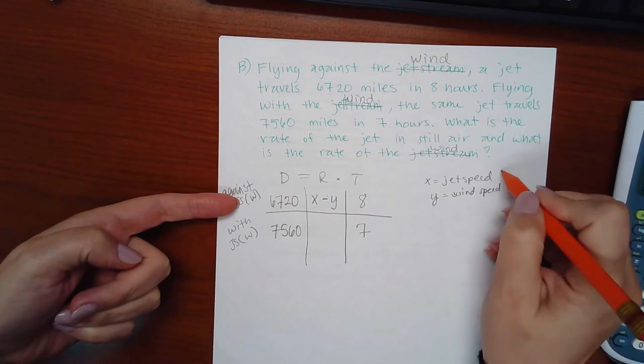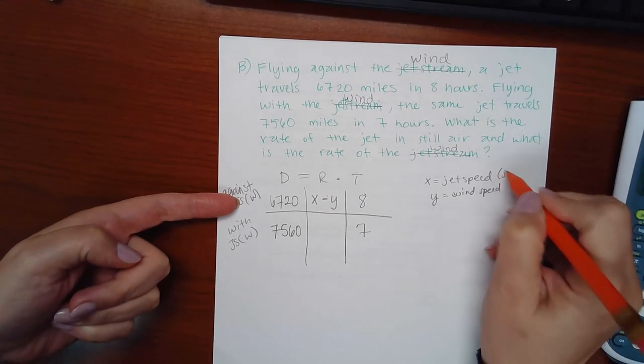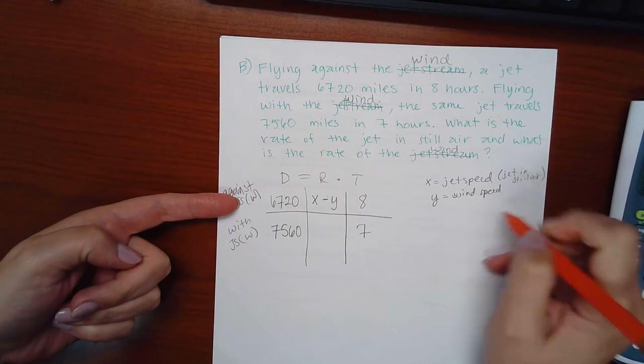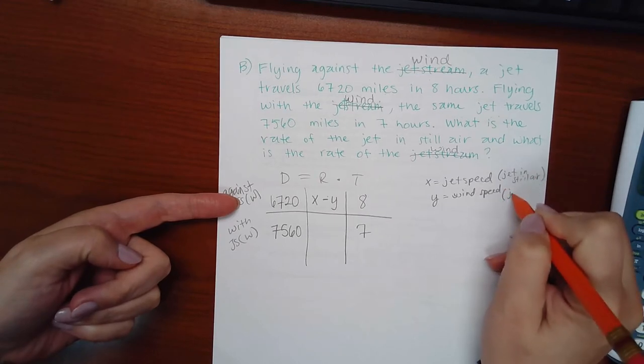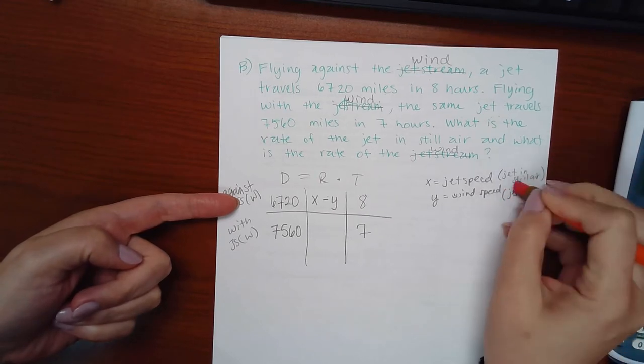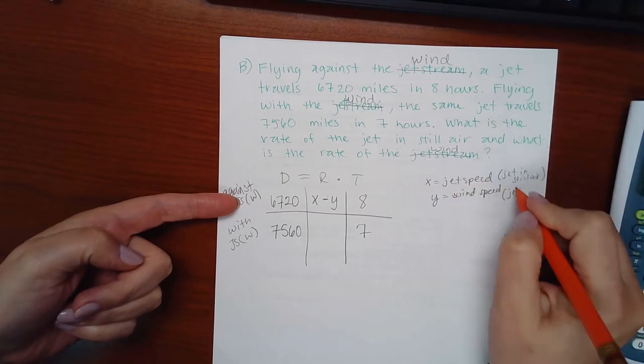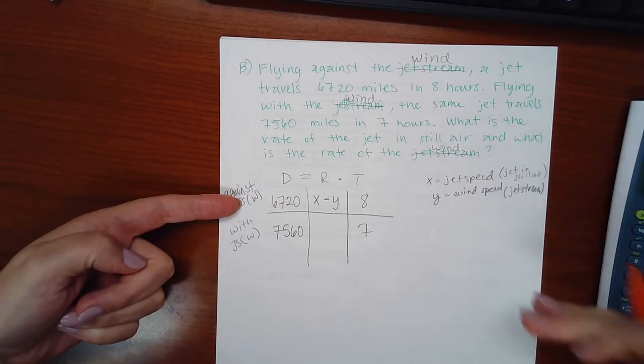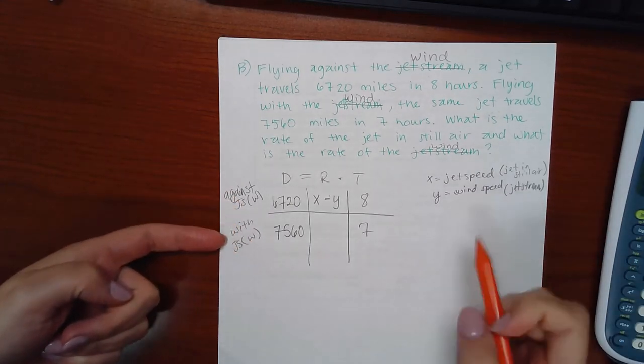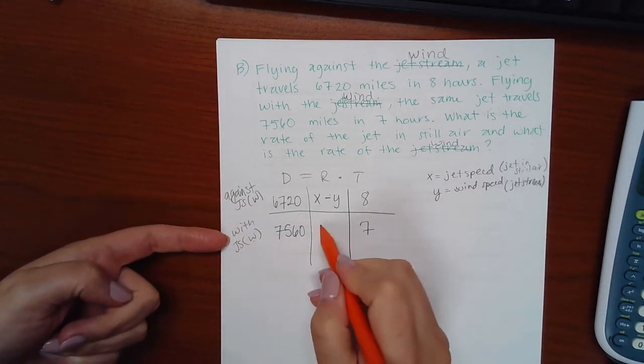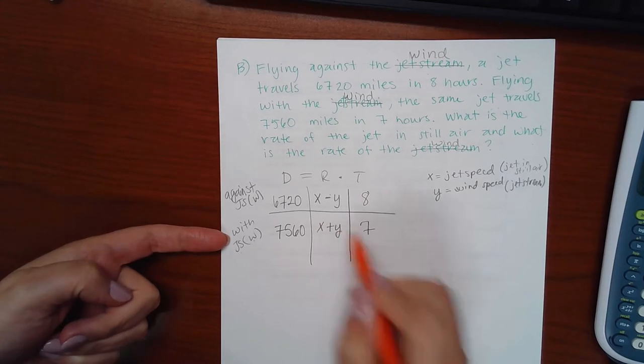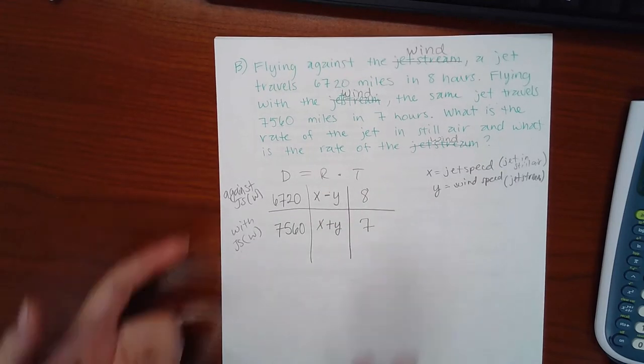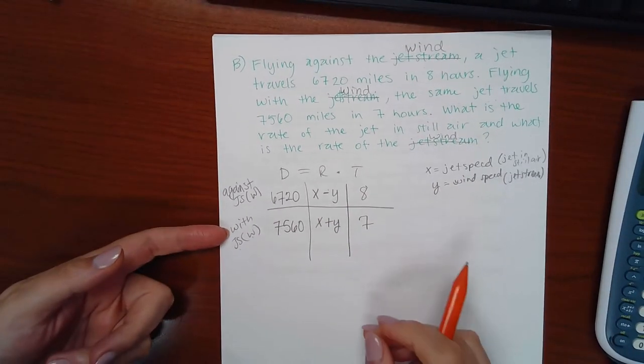And I think the words they use is the jet in still air and the word they use here is jet stream. And that will help us later to know which letter to plug into which box. Here, with the wind, it would help my rate go faster. Okay, because the wind is going to help push the plane forward faster. Okay, so now I've got my two equations.